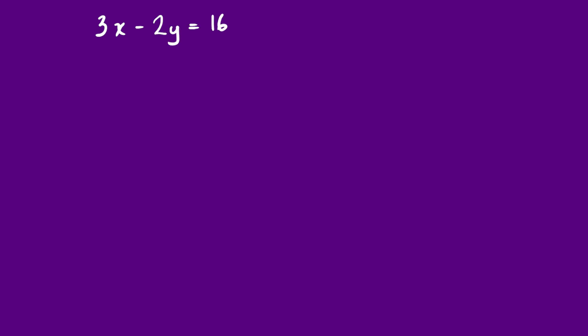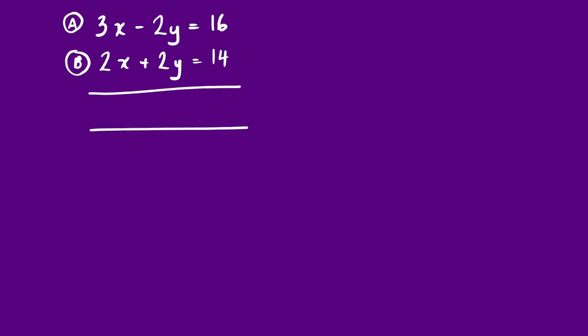So far all the examples have involved subtracting one equation from the other, because that removes one of the variables. But if you look at this next example — 3x − 2y = 16 and 2x + 2y = 14 — if we add these two equations we get 16 + 14 = 30; negative 2y + 2y = 0, the y's have gone; and 3x + 2x = 5x. So 5x = 30, meaning x = 6.